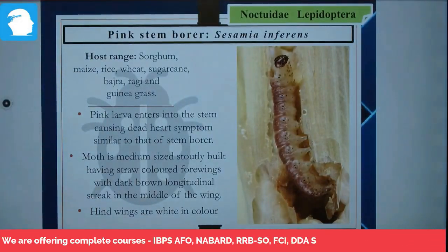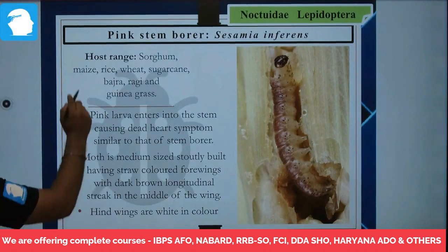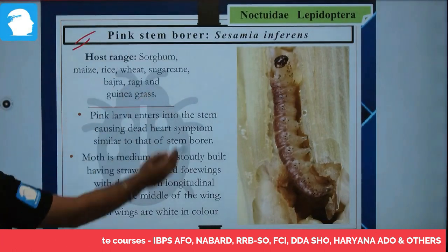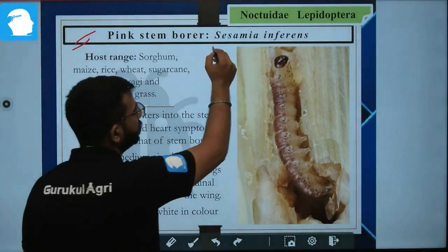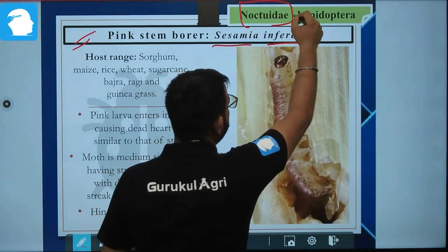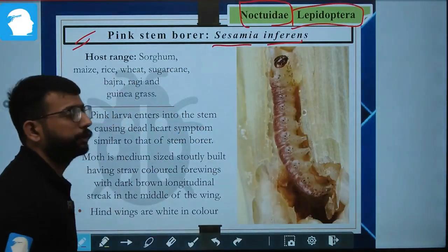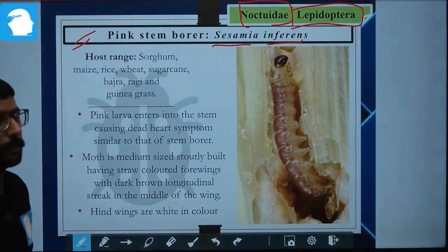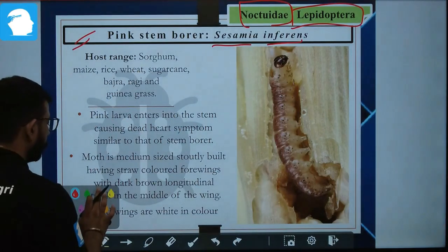Next is pink stem borer. The scientific name is Sesamia inferens, family is Noctuidae, and order is Lepidoptera. This is important — you need to memorize the scientific name, family, and order.